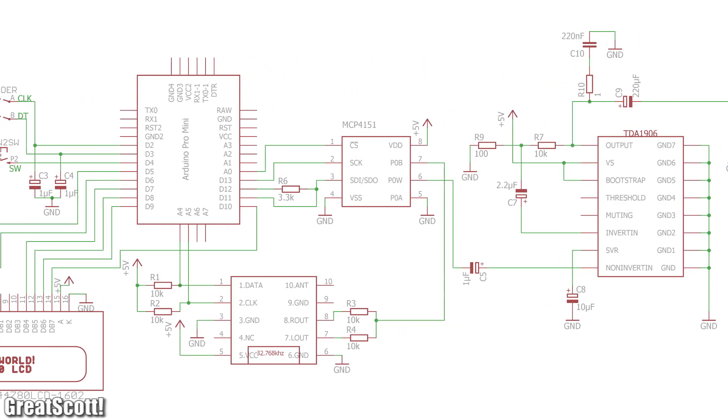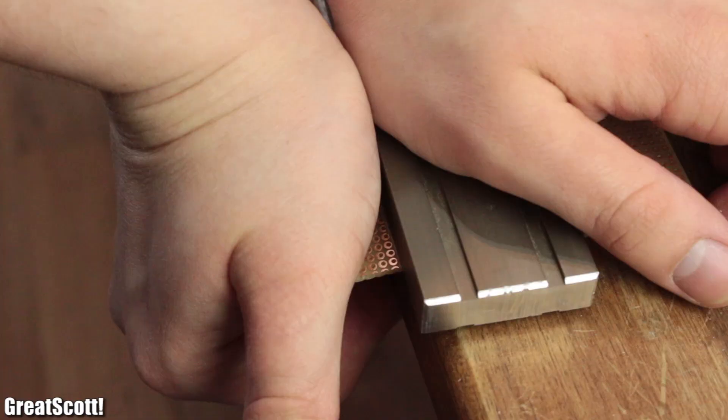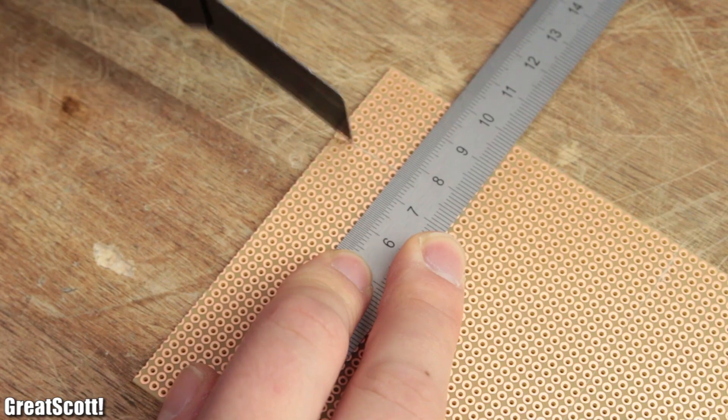To make the circuit permanent I used a perfboard with copper dots which I snapped to a size of around 8.2 by 7.6 centimeters.